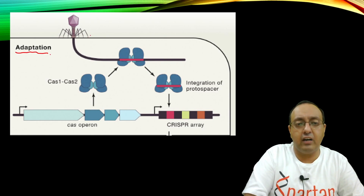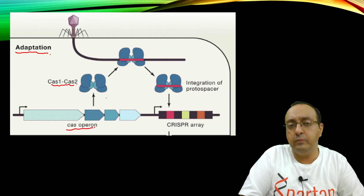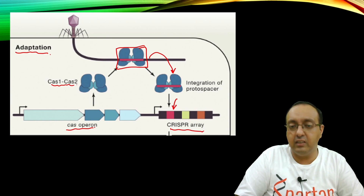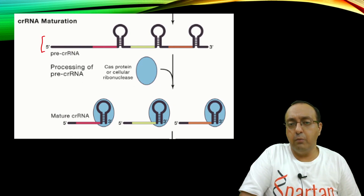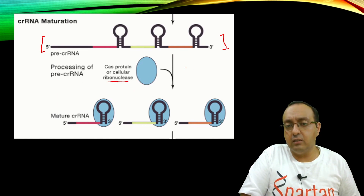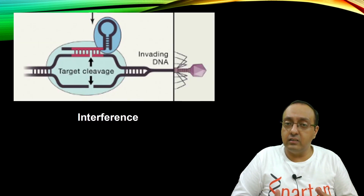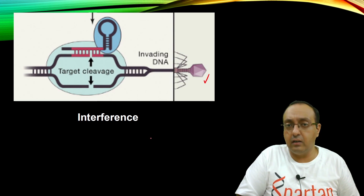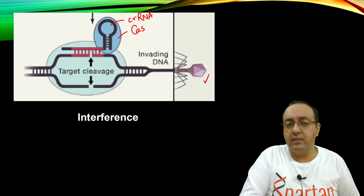In the adaptation phase, when a bacteriophage injects its genetic material, Cas1 and Cas2 proteins isolate spacer sequences and integrate the protospacer into the CRISPR array. This leads to formation of the precursor CRISPR RNA — the full-length transcript from the complete CRISPR array — which is then processed by cellular ribonuclease III into mature CRISPR RNA. In the final interference step, the surveillance complex containing the Cas protein and CRISPR RNA detects homology and leads to cleavage.